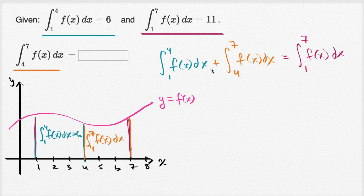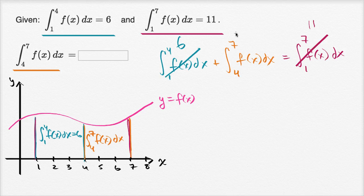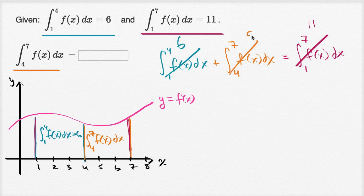They give us a lot of this information. They tell us that the integral from one to four is six, and they tell us that the integral from one to seven is 11. So we have six plus the unknown equals 11. Six plus what equals 11? The definite integral from four to seven must be equal to five.